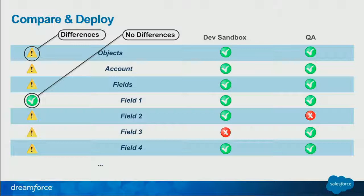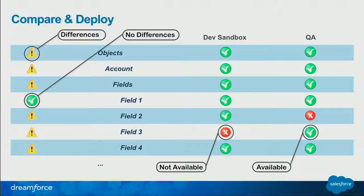You can then go on and have a look at whether the components are even available in the two systems. For example, for field three, you can see that in the Developer sandbox this field isn't there, but in the QA sandbox it's available — somebody put it there before creating it in the Developer sandbox. The opposite is the case for field two. For field four, you can see it's actually available in both systems, but there are differences somewhere. You then have to expand the tree more to see that perhaps the picklist value was added or updated, the description or label has changed, or maybe it's just required in one system but not in the other. I'll show you that in more depth in the live demo later on.